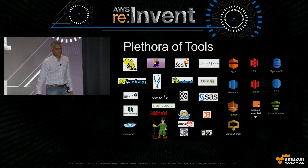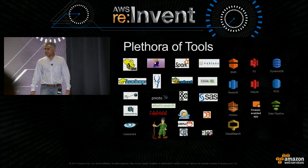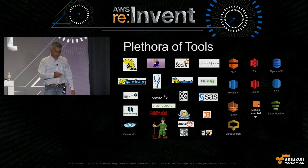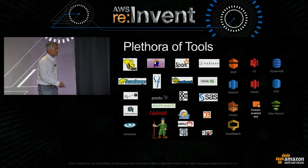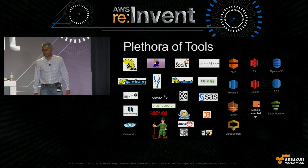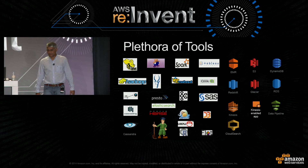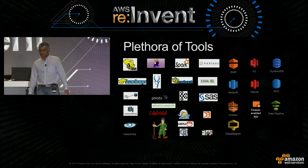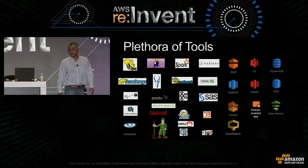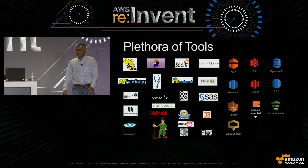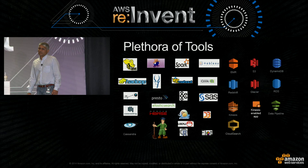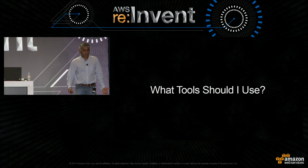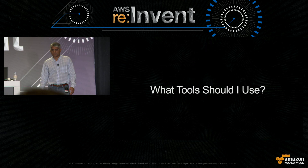Luckily, there is a plethora of tools in the industry. The Apache and open source ecosystem has a zoo of technologies — Hive, Pig, Spark, Hadoop, and even ZooKeeper at the bottom. On the AWS side, we have Elastic MapReduce, S3, DynamoDB, Redshift, and more. One of the big challenges customers are having is: what technology do I use, and why and how? That was the genesis of this presentation. Let's try to simplify this processing.